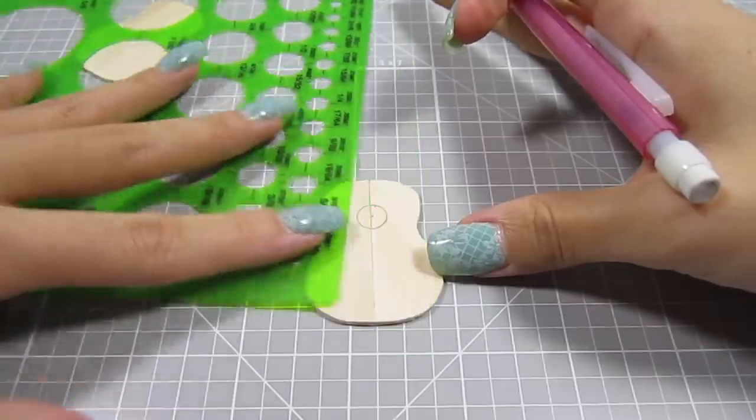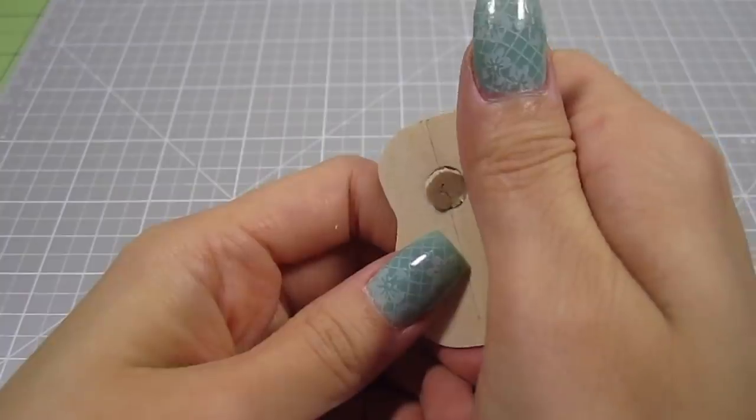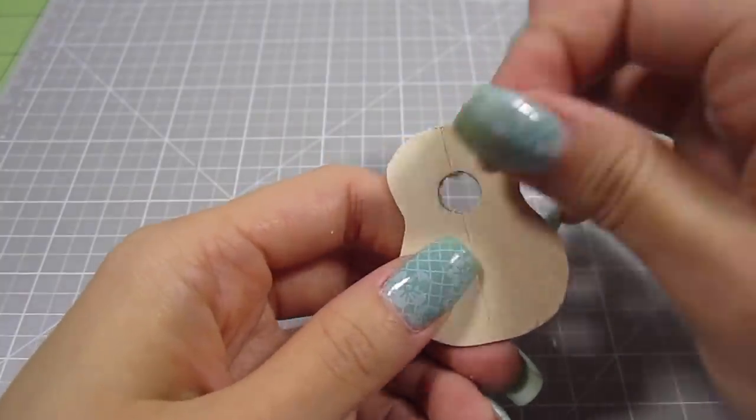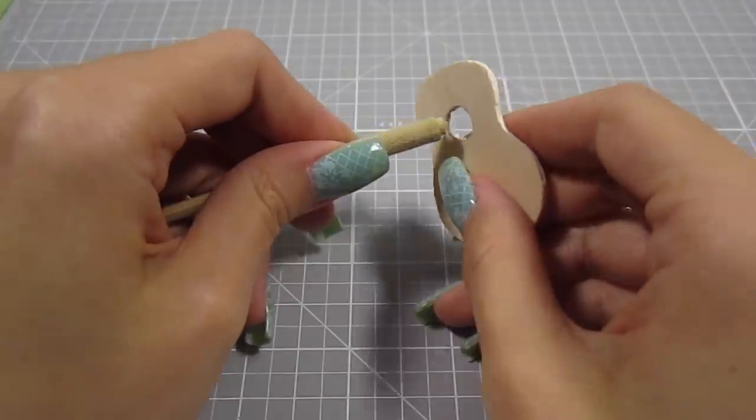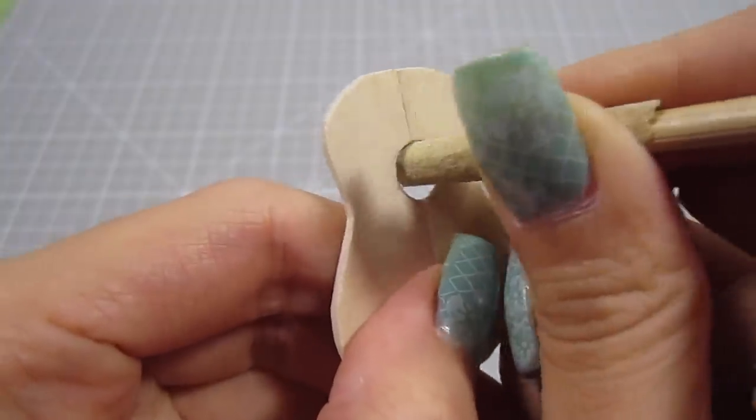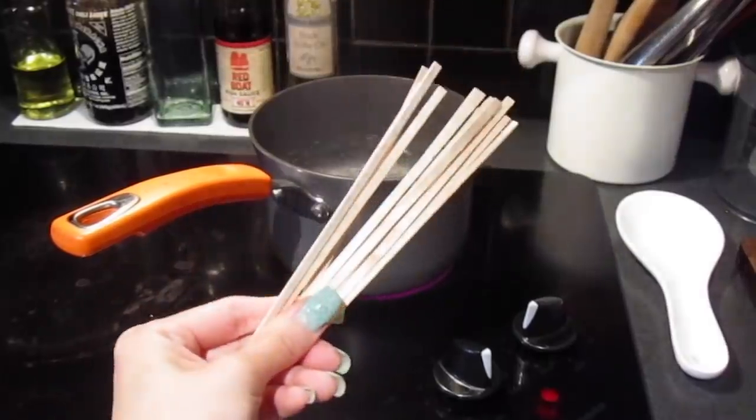Then draw the sound hole onto one of the pieces and cut it out. To sand the inside of the hole, I like to roll some sandpaper around a dowel and just use that. For the size of the body, I'm using some wooden coffee stirrers.